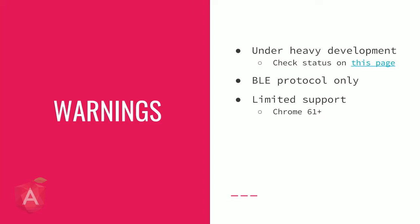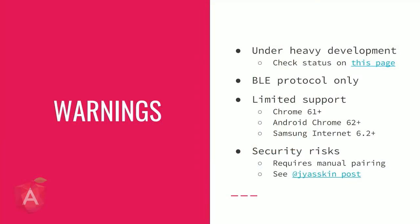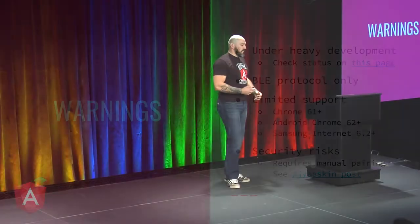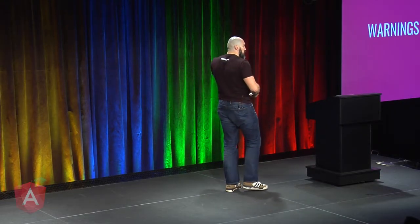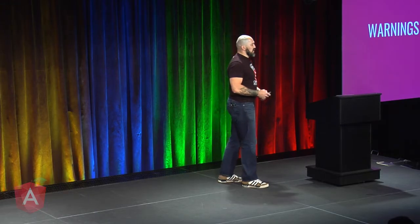There is limited browser support: Chrome 61 and above, Android Chrome 62 and above, and Samsung Internet 6.2 and above, which is basically a Samsung version of the Chrome browser. There are also security risks — there's a post that explains the security concerns around Web Bluetooth and what you can do with it, because if you have access to the device, depending on how it's been implemented, you can change the configuration and do some bad things. As a result, a manual pairing needs to occur.